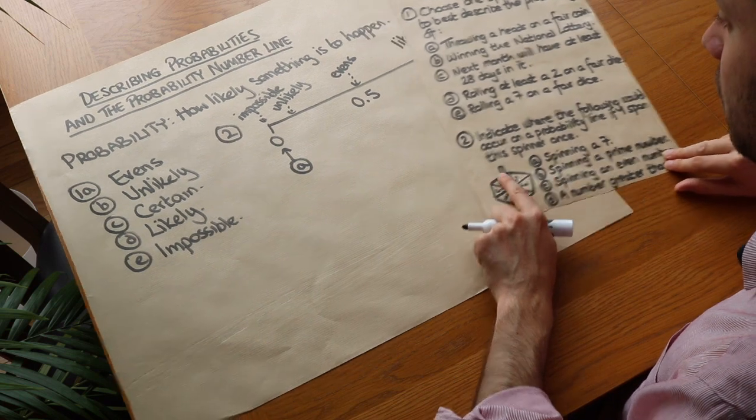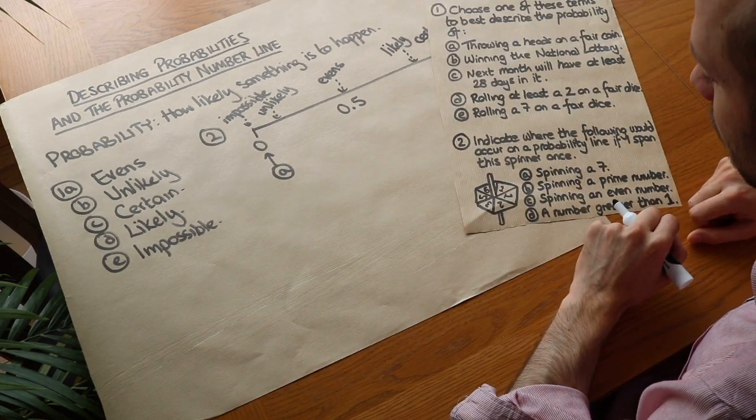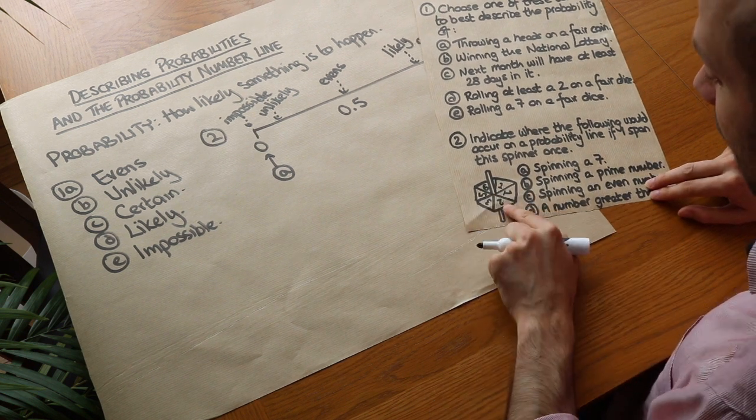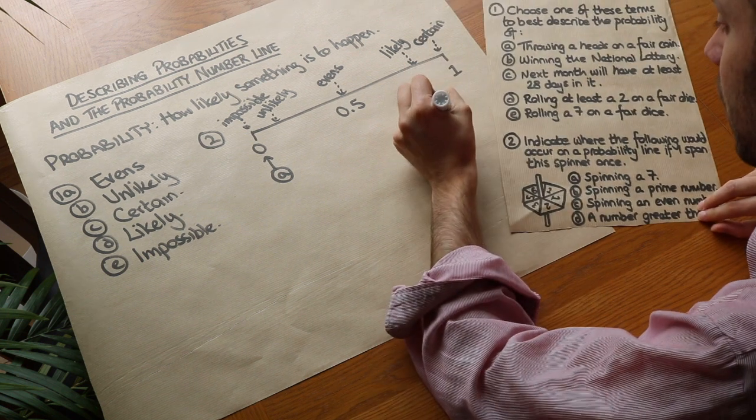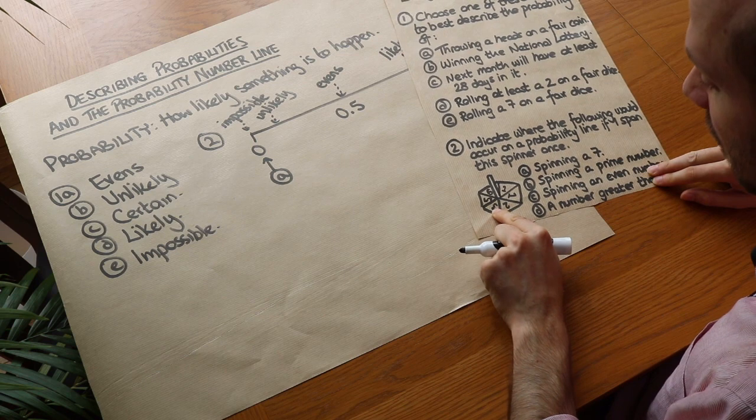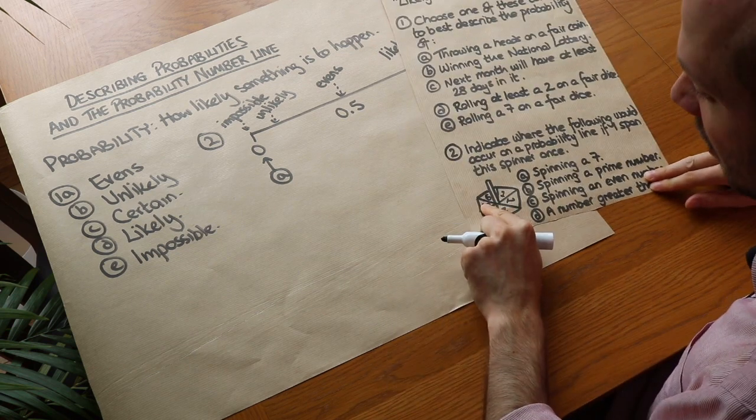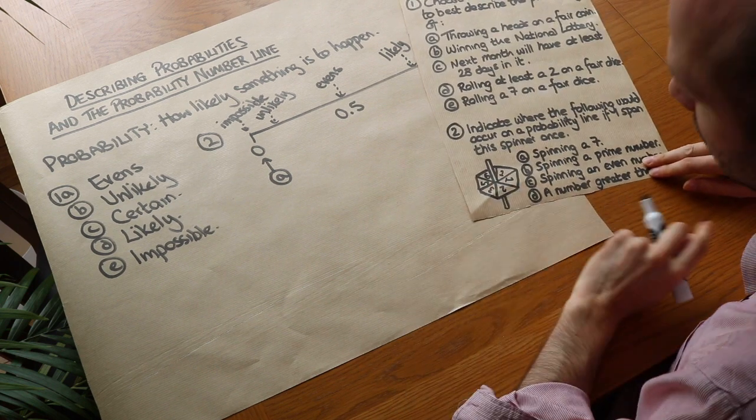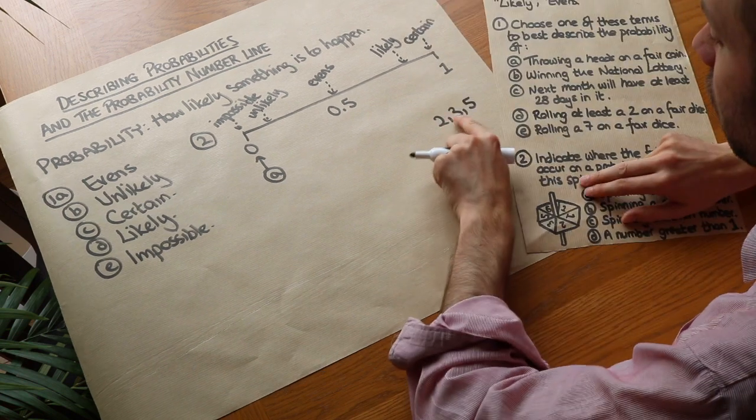What about spinning a prime number? Now remember that a prime number has two factors, only itself and 1. Now 1 is not prime because it only has one factor. However, 2 is prime. It's only factors of 2 in itself. So 2 is prime. What else have we got? 3 is prime. It's only factors of 3 in itself. 5 is prime. It's only factors of 5 in itself. But 6 is not prime because it has other factors like 2 and 3. So we've got 2, 3 and 5.